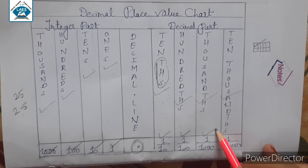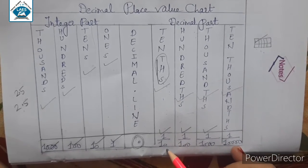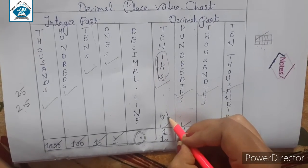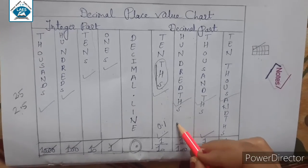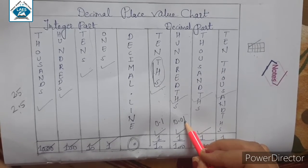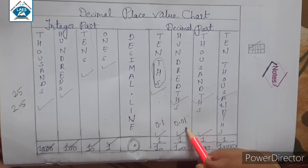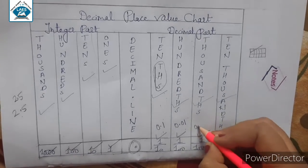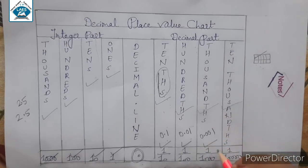So let's know their values. One upon ten means in decimal form we will write zero point one (0.1). And one upon hundred will be written as zero point zero one (0.01) when we divide this number. One upon one thousand gives zero point zero zero one (0.001). In this way we can continue.